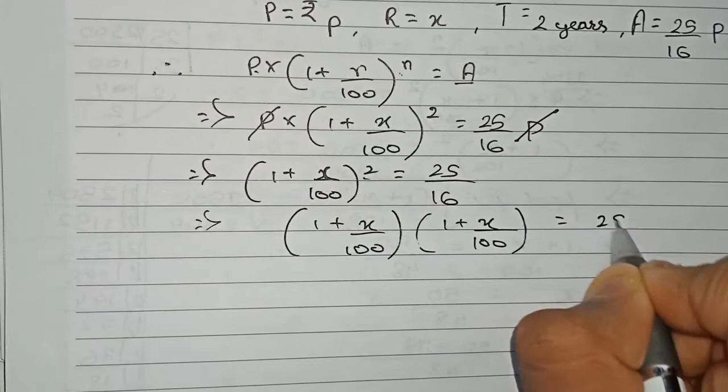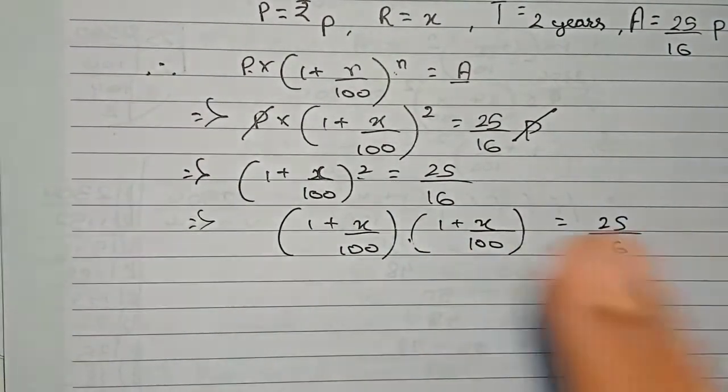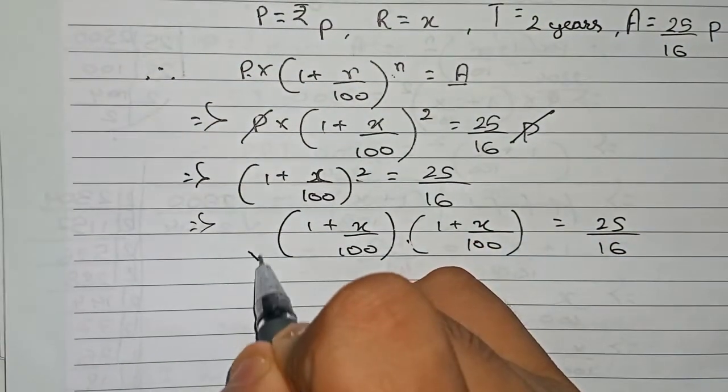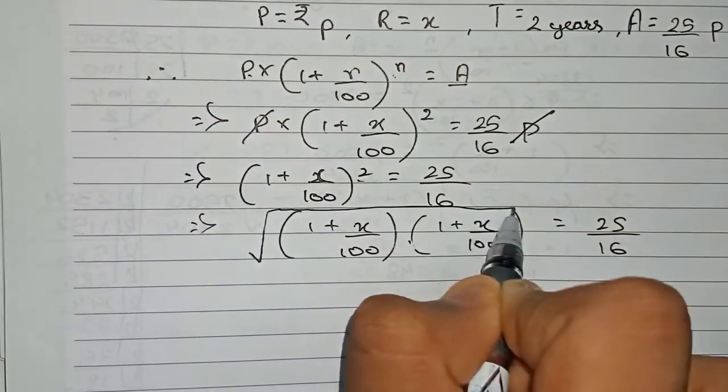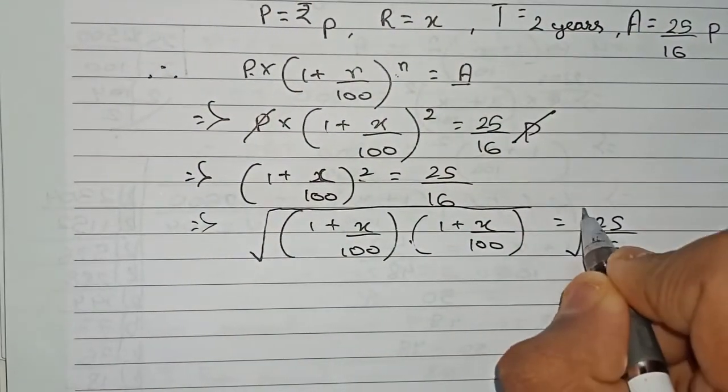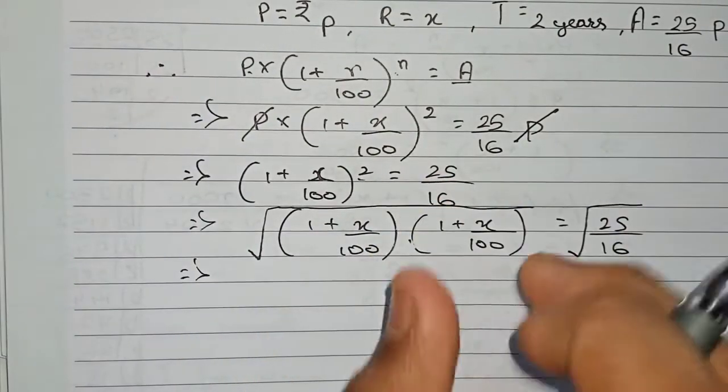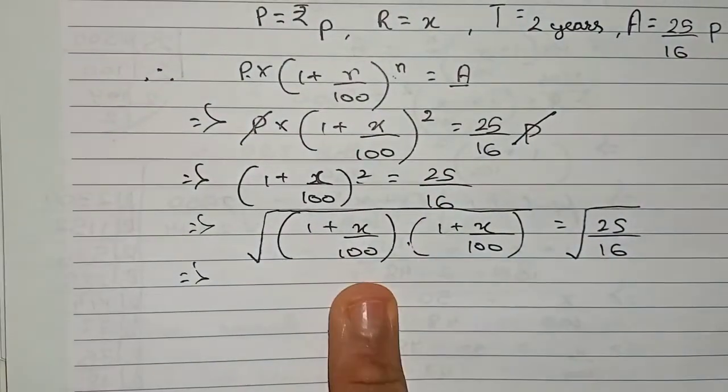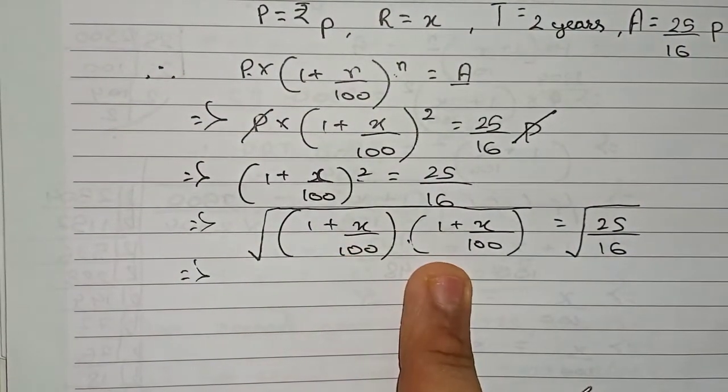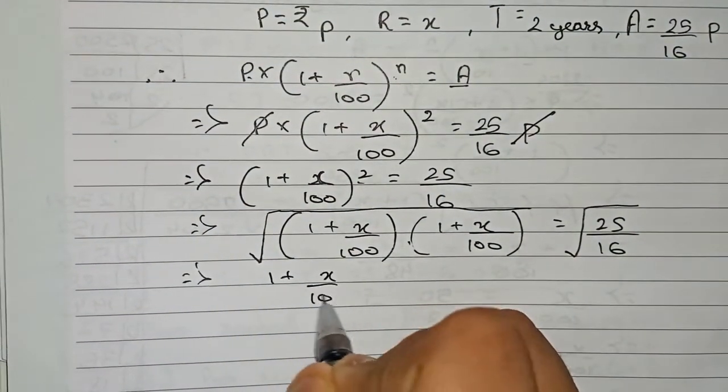As this is written two times, therefore to reduce it to one time we have to do the square root. So you do square root to it, and as you add square root to one side, we have to also do the square root to another side. Square root means when two are there we take only one, so (1 plus x by 100) equals square root of 25 by 16.